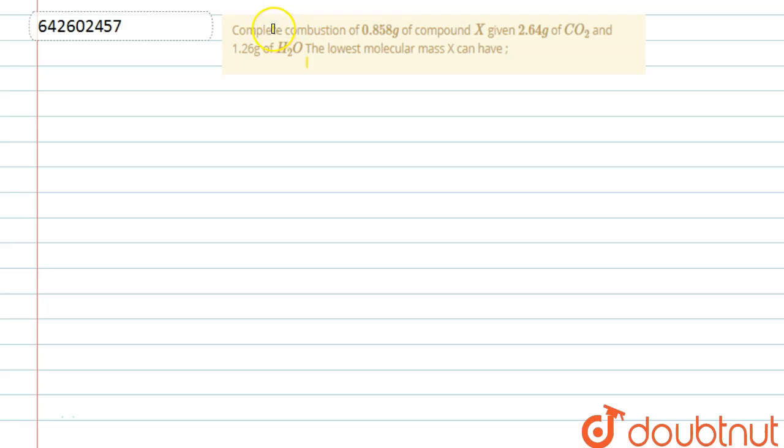In this question, we are given complete combustion of 0.858 gram of compound X gives 2.64 gram of CO₂ and 1.26 gram of water. We need to find the lowest molecular mass X can have. Let us suppose the compound X is